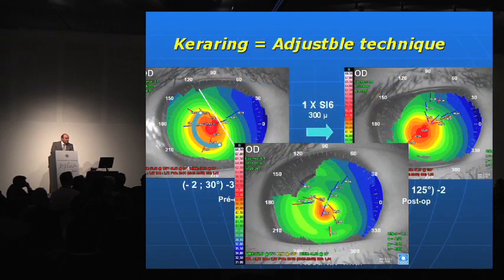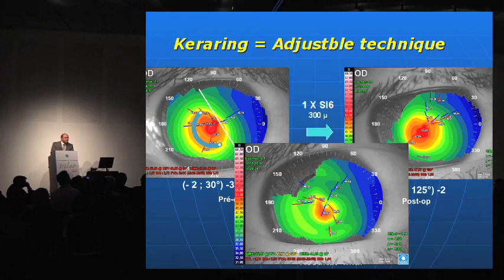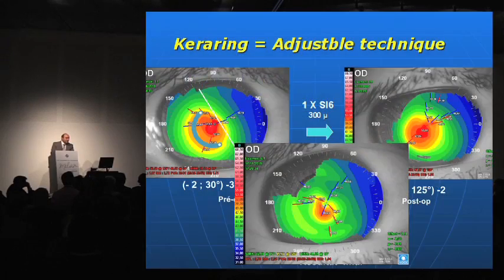Remember that the Keraring is an adjustable technique. In this example of central keratoconus with minus two cylinder and minus three sphere, we placed one SI6 and observed very poor central flattening. So we decided after one year to replace this SI6 with SI5, and you can see that we achieved better central flattening.